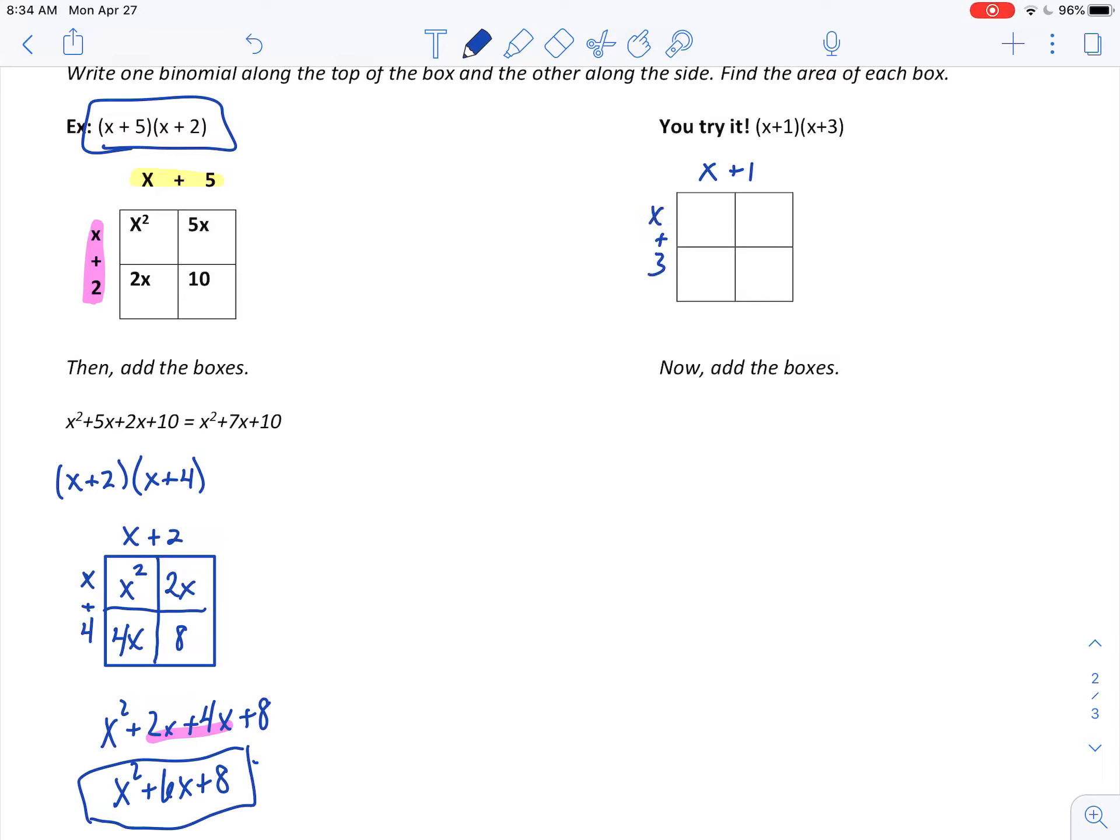All right, I'd like you guys to try adding the binomials here. So draw on your binomials there. Write those in there. And then multiply to find the areas of each one of these four boxes. So it would be x plus 1, x plus 3. This would be x times x is x squared. 1 times x is 1x. 3 times x is 3x. And 1 times 3 is 3. Then we would add those boxes.